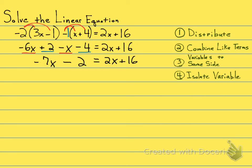And how are you going to get rid of a 2x? Well, it's a positive 2x. So we're going to have to subtract 2x from the right-hand side of the equal sign. And if we do it to the right side, we need to do it to the left side.